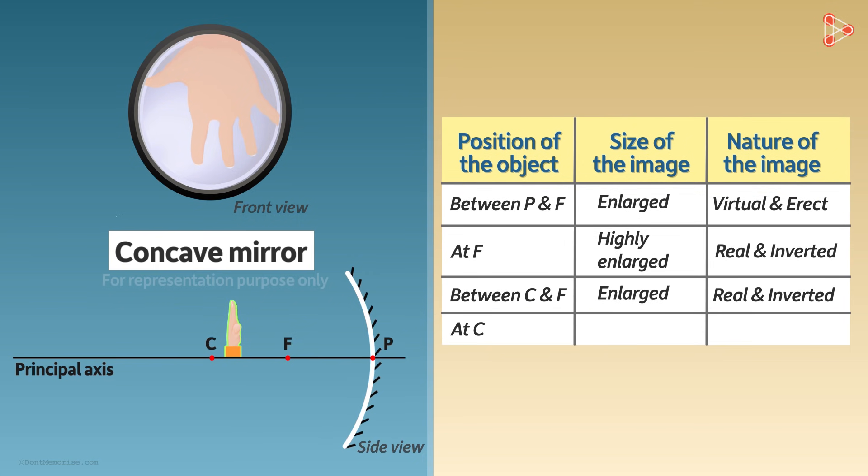When the object is at point C, the image is still real and inverted. But now the size of the object and its image is same. Yes, at this point, both the object and the image are of the same size.